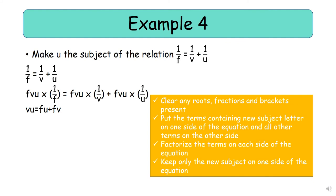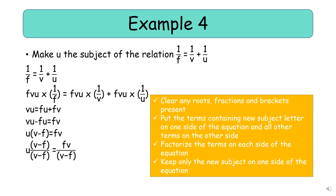We want to make u the subject, so we move all terms containing u to one side: vu − fu = fv. Next we factorize u out: u(v − f) = fv. Then we divide both sides by (v − f), giving us u = fv / (v − f).